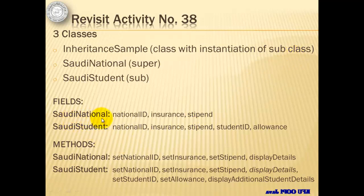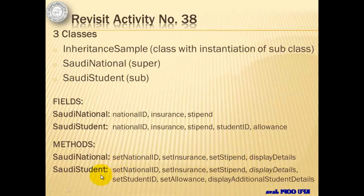The Saudi National superclass has three fields: national ID, insurance, and stipend. The Saudi Student subclass has five — three of which came from the Saudi National superclass and two were declared on its own: the student ID and allowance. The Saudi National superclass has four methods: set national ID, set insurance, set stipend, and display details. The Saudi Student subclass has seven — four of which came from the Saudi National superclass and three were declared inside: set student ID, set allowance, and display additional student details.